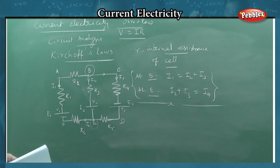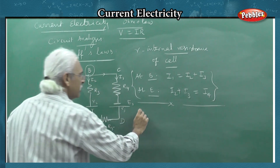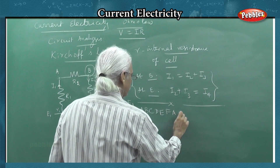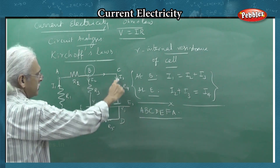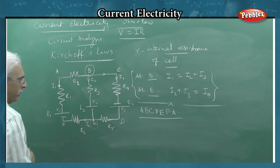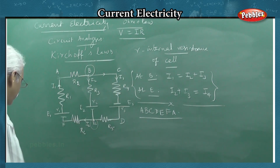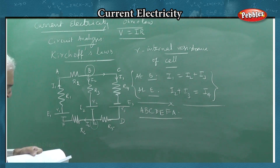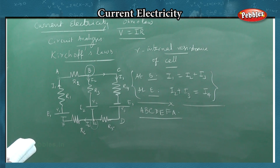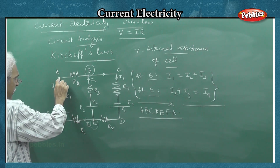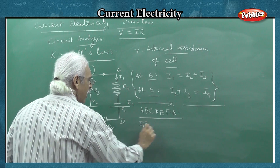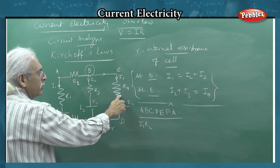Now we can use a particular closed loop. In the book, we use loop A, B, C, D, E, F, A — the larger closed loop. We will apply the voltage law: the sum of all products of current and resistance. I1 flows through R2 — product is I1·R2. Then I3 flows through R4 — product is I3·R4.